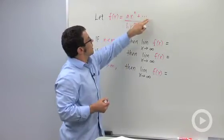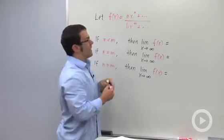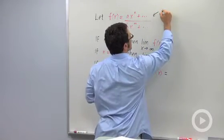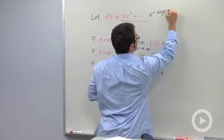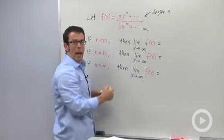So we're going to assume that the numerator is a polynomial of degree n, and the denominator is a polynomial of degree m.